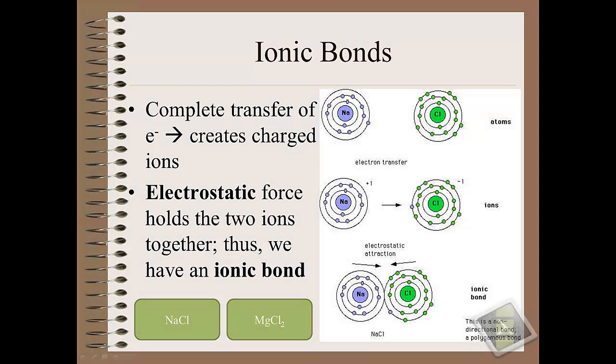When we talk about elements that have different electronegativities, depending on how big the difference is, we'll determine what type of bond is formed, and the type of bond influences the type of properties that a given compound is going to have.